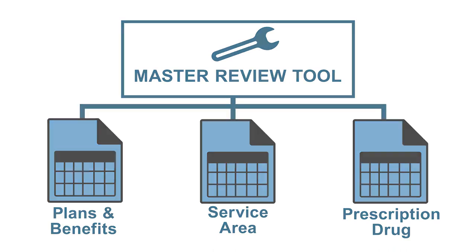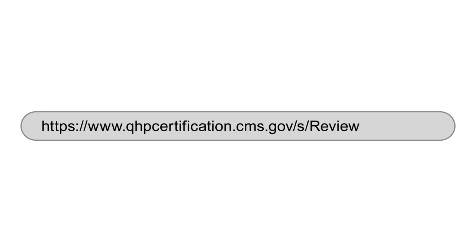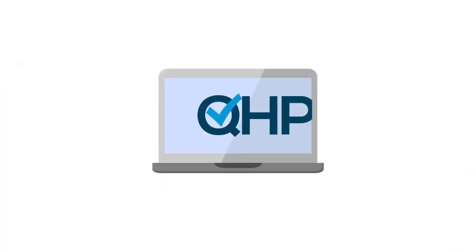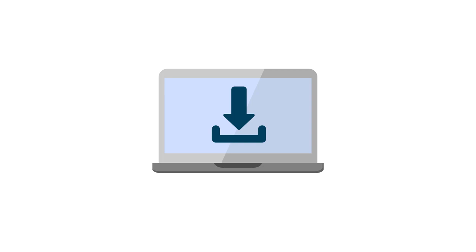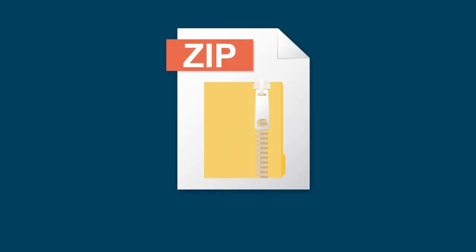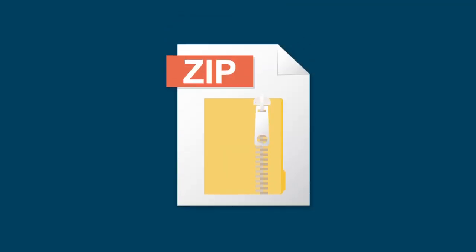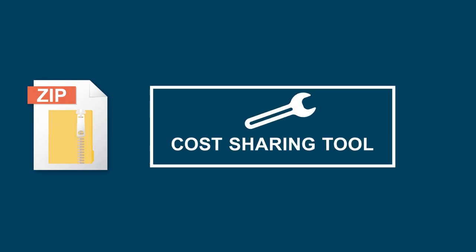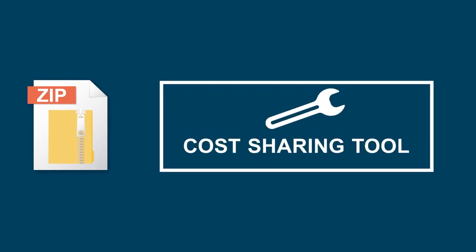To download the Cost Sharing Tool, visit the Review Tools webpage of the QHP Certification website and click on the Automated Review Tools link. A zip file will be downloaded to your computer. Within this zip file, you'll see several of the standalone review tools, including the Cost Sharing Tool.